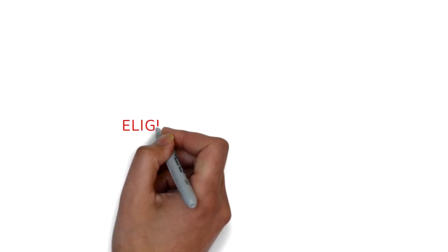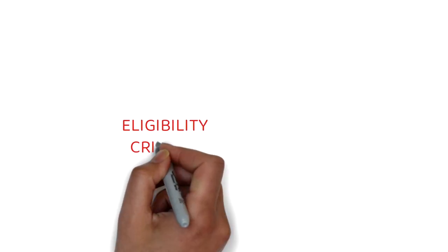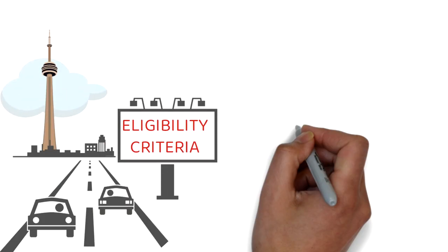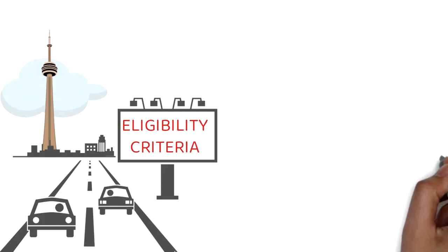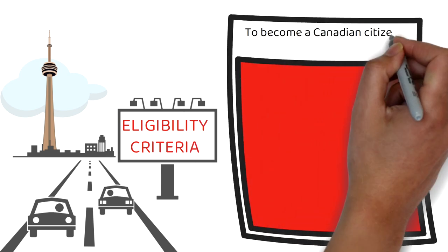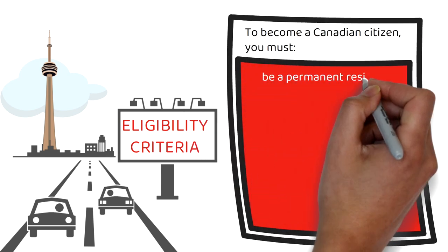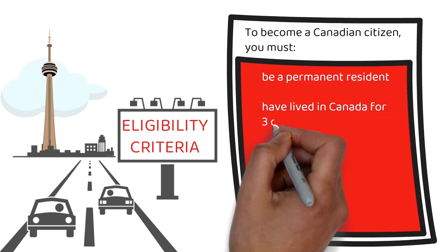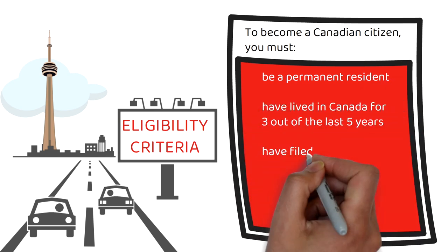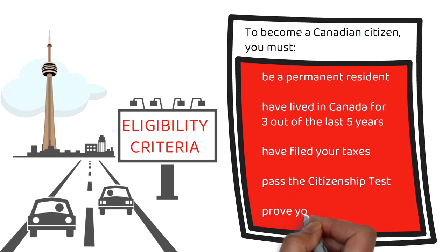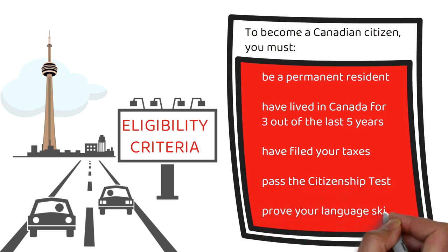Let's start this video with the eligibility criteria. It's very important to ensure that you're eligible to apply for citizenship. To become a Canadian citizen, you must be a permanent resident, have lived in Canada for three out of five years, have filed your taxes, passed the citizenship test, and prove your language skills.